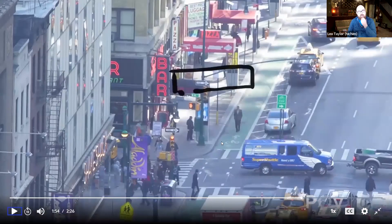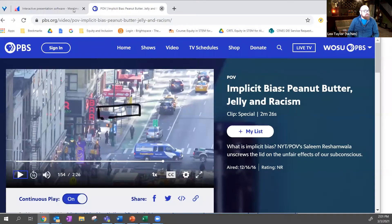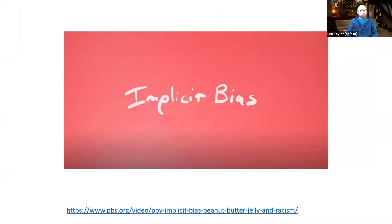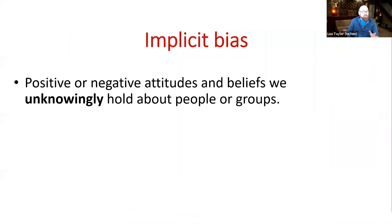I love this analogy of the fog because it highlights the passive nature of our socialization. Implicit biases are the positive or negative attitudes and beliefs we unknowingly hold about people or groups. Explicit bias, on the other hand, would be the biases we're aware of. Unlike conscious bias, we don't know when implicit bias operates, and it often contradicts conscious beliefs.